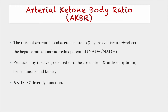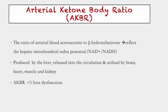The next modality is the arterial ketone body ratio. Acetoacetate and beta-hydroxybutyrate are ketone bodies exclusively produced by the liver and released into the circulation for utilization by organs like the brain, kidney, and muscle. The ratio of arterial blood acetoacetate to beta-hydroxybutyrate reflects the hepatic mitochondrial redox potential. When the ratio decreases, it correlates with increased liver dysfunction. Normally in a healthy patient the ratio is greater than 1, and in liver disease it falls below 1.